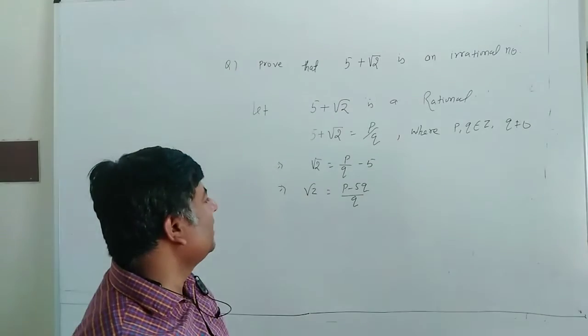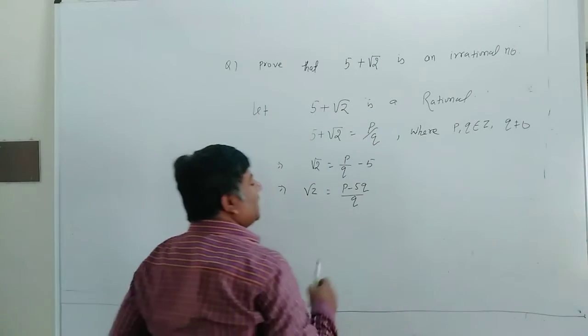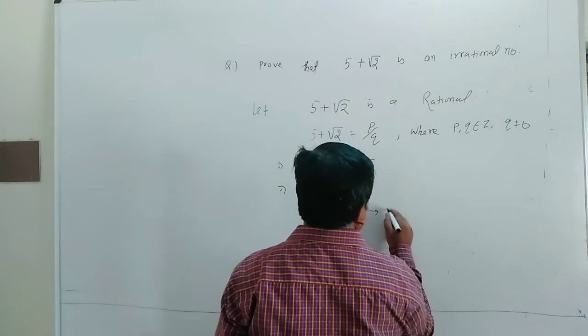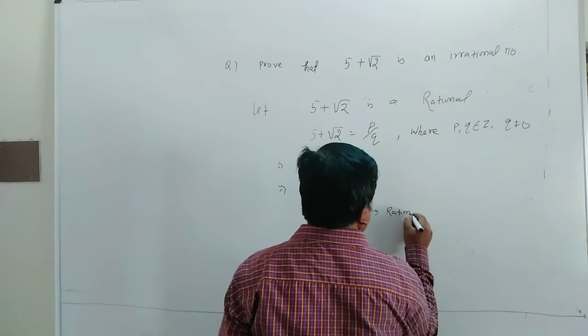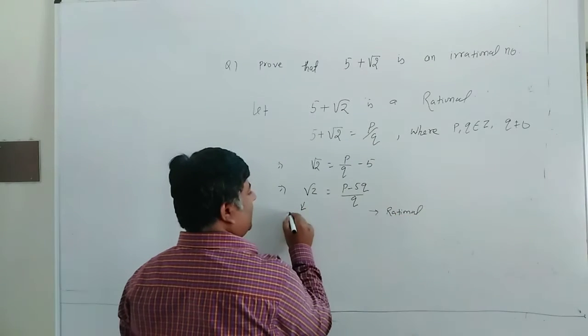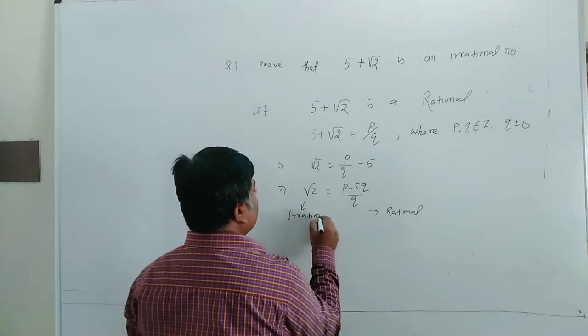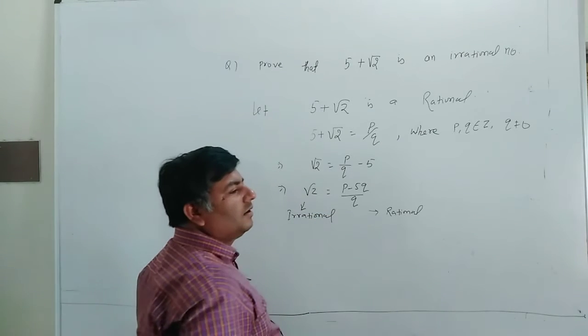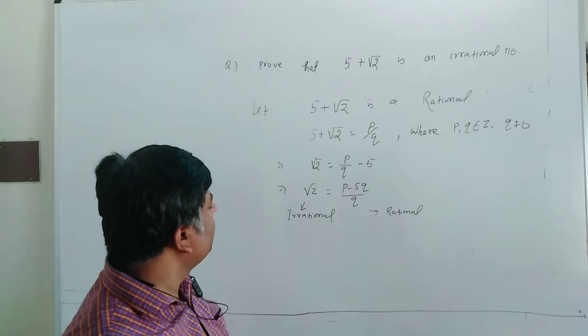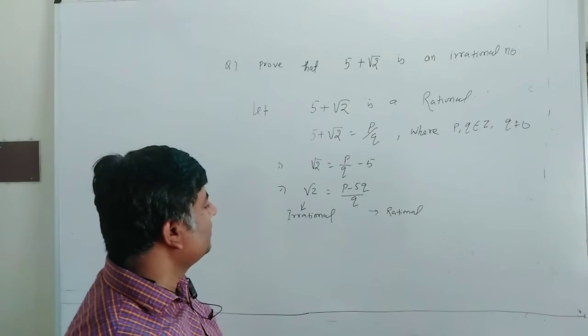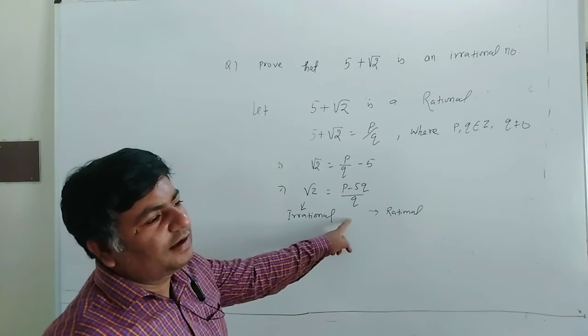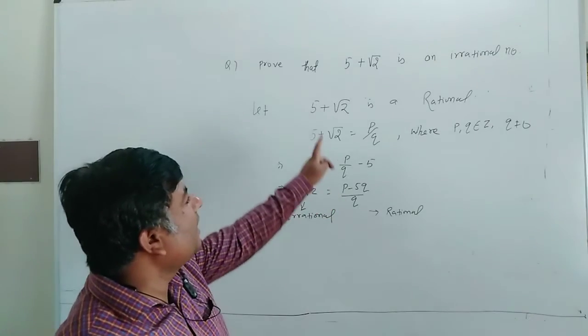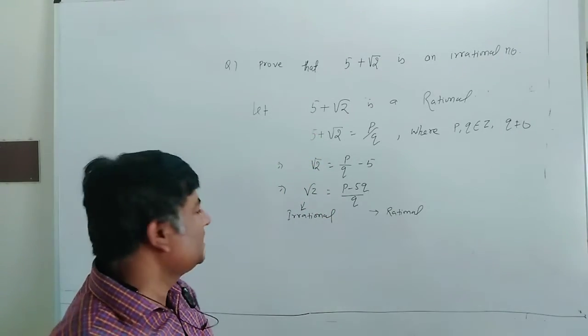Integer divided by integer is a rational number, so left hand side is rational. But root 2 is irrational. So rational number becomes irrational, which is a contradiction.